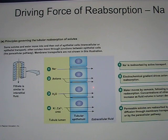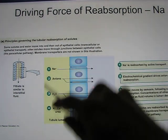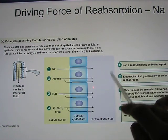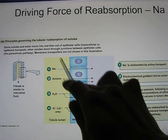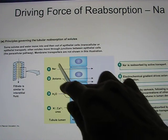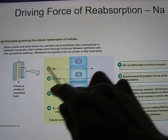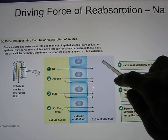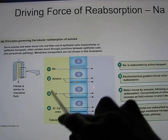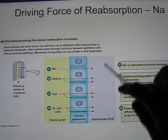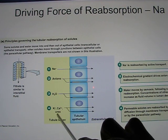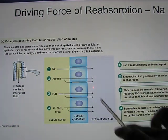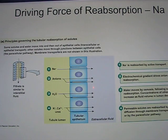When deciding what molecule to take back from the lumen into the ECF, sodium is taken back first. After sodium is reabsorbed, it helps negative-charge anions to follow. Then water follows to dilute those ions. After water moves, other ions and molecules follow water. So by taking sodium back, you essentially fix all the other problems.